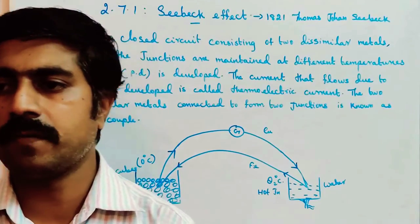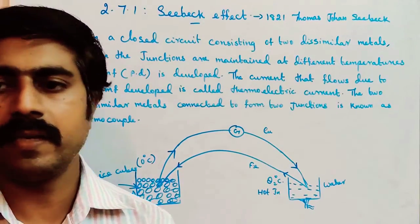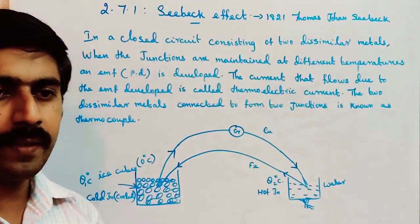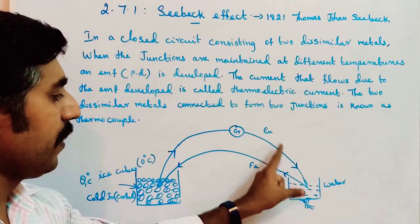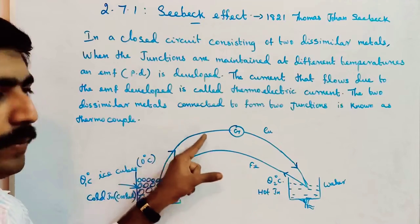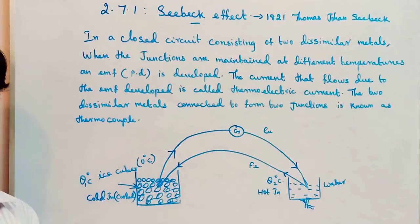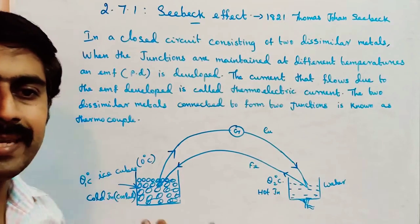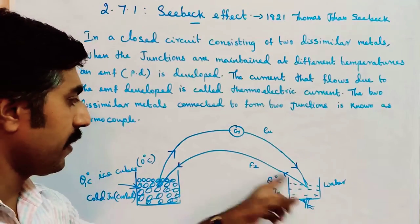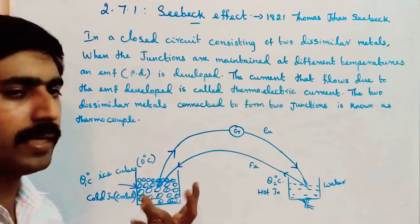In the thermoelectric series, current at the hot junction flows from the earlier metal in the series to the later metal. So at the hot junction, current flows from copper to ferrous, and at the cold junction, current flows from ferrous to copper. Heat is absorbed at the cold junction and liberated at the hot junction.